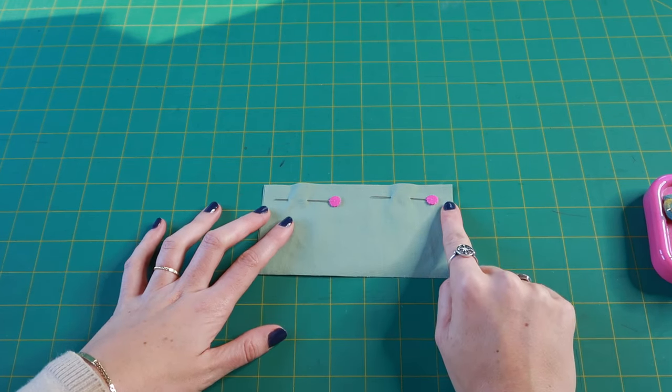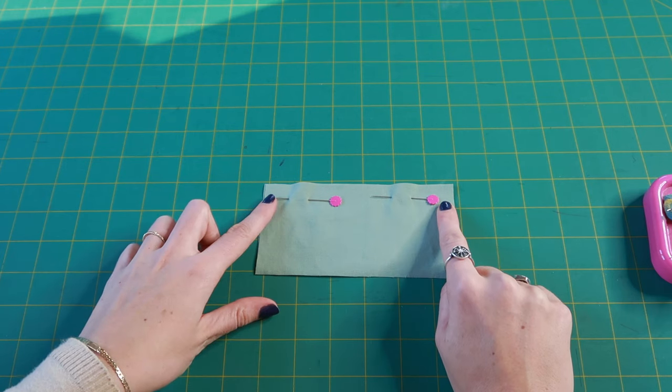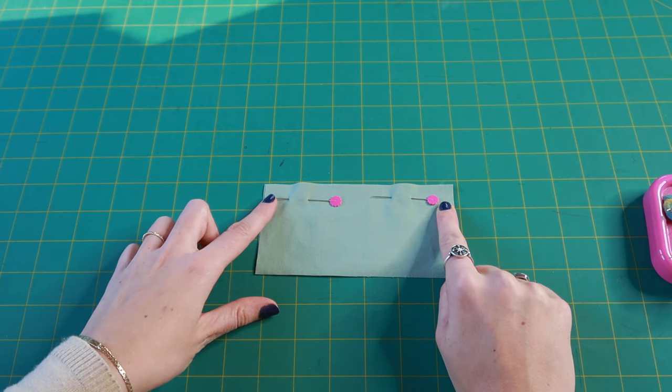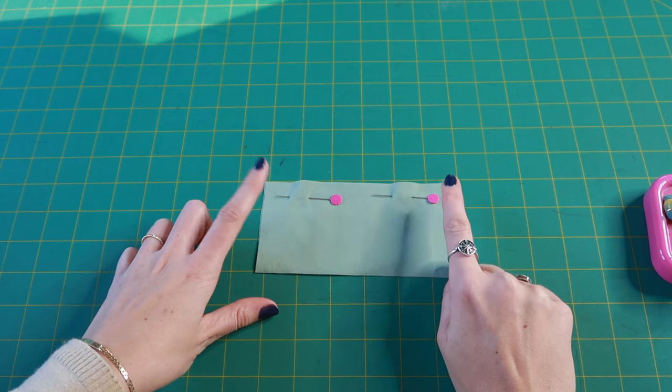Now a plain seam is just a straight stitch on your normal stitch width and length and typically sewn on a 5/8 inch seam allowance. Depending on what pattern you are using and what the directions say the seam allowance might be different, but standard seam allowance is going to be 5/8.